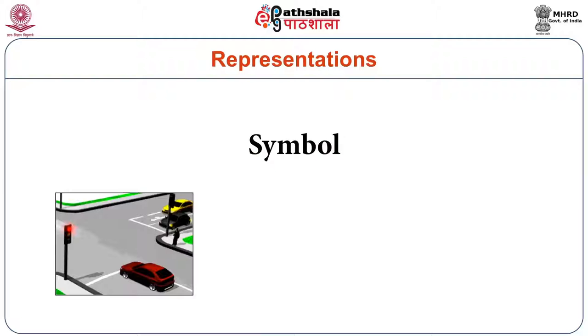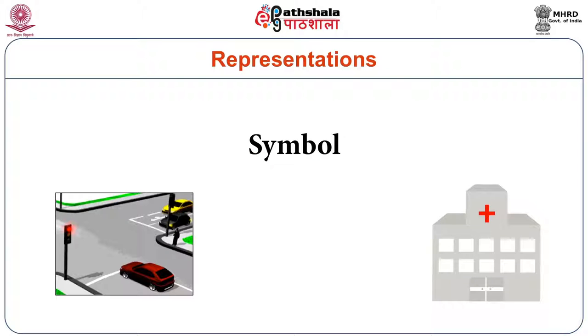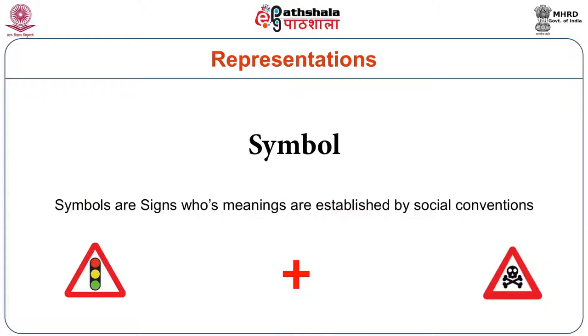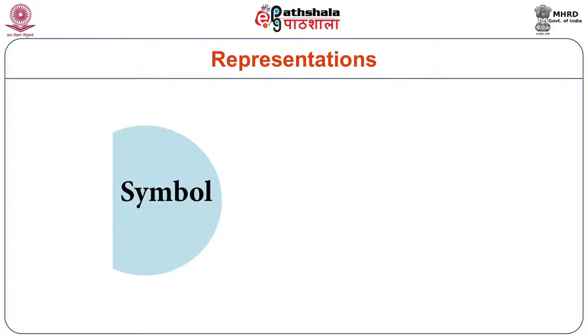There is a third, far more complicated sign which is what most of us doing literature and cultural studies are interested in, and that is the symbol. When you drive, you stop at the color red. When you want to go to a doctor, you look for a sign of the red cross. Does the red cross in any way represent the practice of medicine? It doesn't. Does the red light say stop in any significance? No, it doesn't. Symbols are signs whose meanings are established by social conventions — because we have all accepted that the red light means stop, that the red cross means a medical doctor. Symbols are more complicated signs because they capture sentiments, intellectual activity, the imagination of the people.